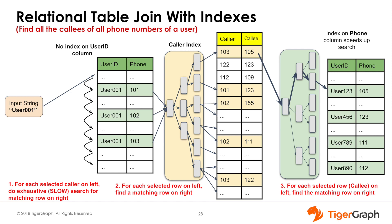Let's take a close look at how a relational database runs this query, starting with a single caller — user 001. Each user can have one or more phone numbers. Because there are multiple phone numbers, the user ID is not a primary key, so we have to look through the entire table to find phone numbers associated with user 001 — in this case, numbers 101, 102, and 103. We now want to find who was called by these three numbers. There can be many calls, so either by using a heavy index or by walking through the entire phone call list several times, we eventually find all the callees. In the third phase, we find the user IDs associated with each callee phone number, which is fairly easy if an index has been built, since each phone number maps to one user ID.